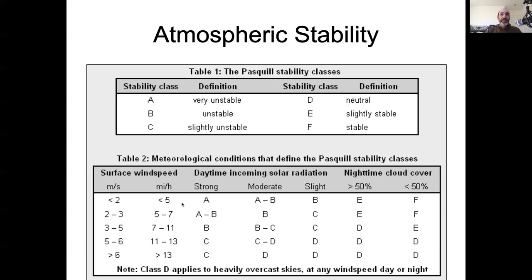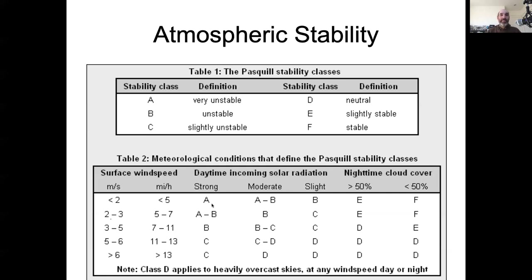The least stable atmospheric conditions are when we have a lot of light and low wind speed, which is kind of surprising that low wind speed corresponds to the most unstable. But that's because when the wind speed is low and you have a lot of light, you have a lot of convection. As the wind speed increases, you're dispersing that heating of the ground more quickly, which actually makes the atmosphere less unstable. When there's less light, there's also going to be less heating and more stability. So for any wind speed class, stronger light means more unstable and less light means more stable — a bright sunny day is more unstable than a cloudy overcast day.